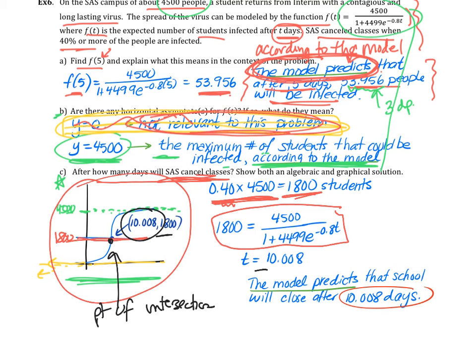So is that definitely when it's going to happen? No, it's according to the model or it's a prediction made based on the model. So you have to say the model predicts that school will close after 10.008 days. Once again, you need to have three decimal points, and you need to tell us that it's a prediction and not a for sure thing. If you don't say it's a prediction, then you're telling us that it's factual, when in fact it's just a prediction. So you need to use that word.